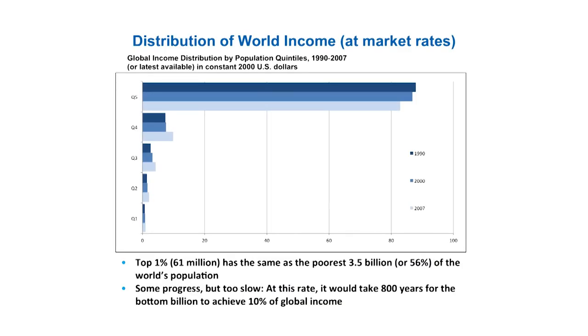There is some sign of progress. The darkest bar reflects 1990 and the lightest bar the most recent data, just prior to the crisis in 2007-2008. There is some sign of improvement, but the problem is the rate. We estimated that at the current rate of progress, it will take about 800 years for the bottom billion — the bottom 20% — to achieve 10% of global income. So there is no reason to claim victory.